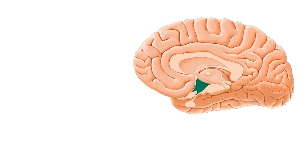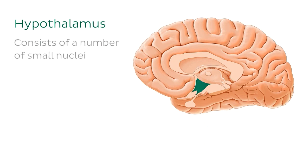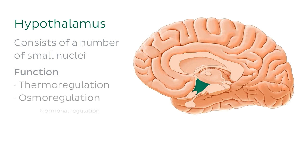Another structure we can see in the illustration of the mid-sagittal section of the brain is the hypothalamus. The hypothalamus is an area of the brain that consists of a number of small nuclei, and we can see it here highlighted in green. It's at the centre of a variety of physiological processes, including thermoregulation, osmoregulation, and hormonal regulation, which is relevant to the endocrine system.